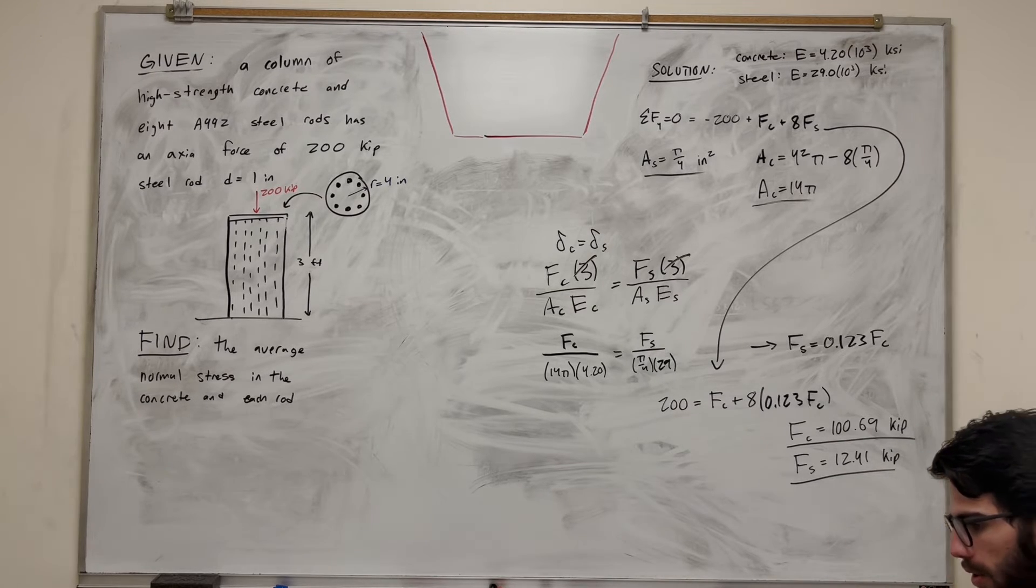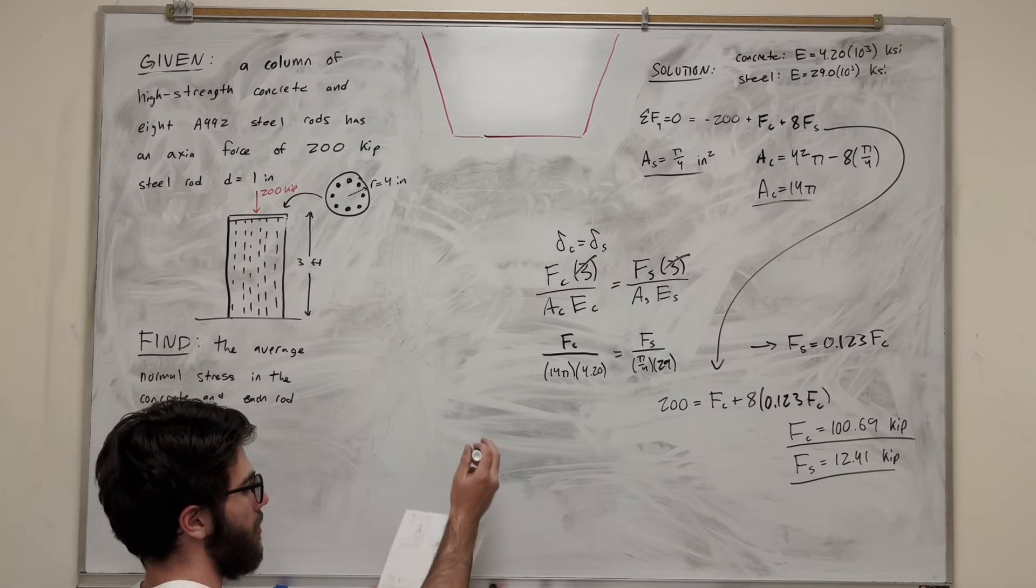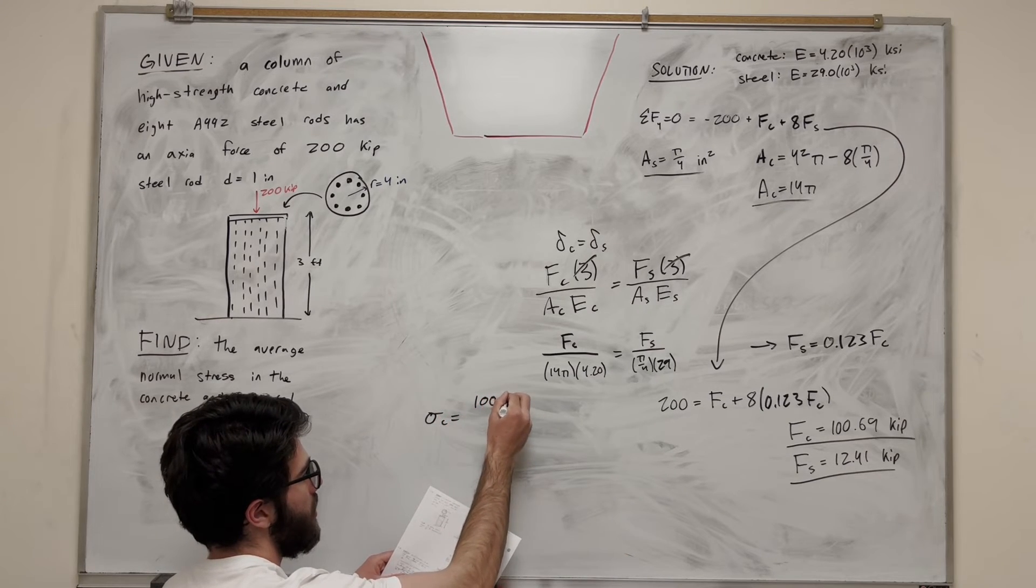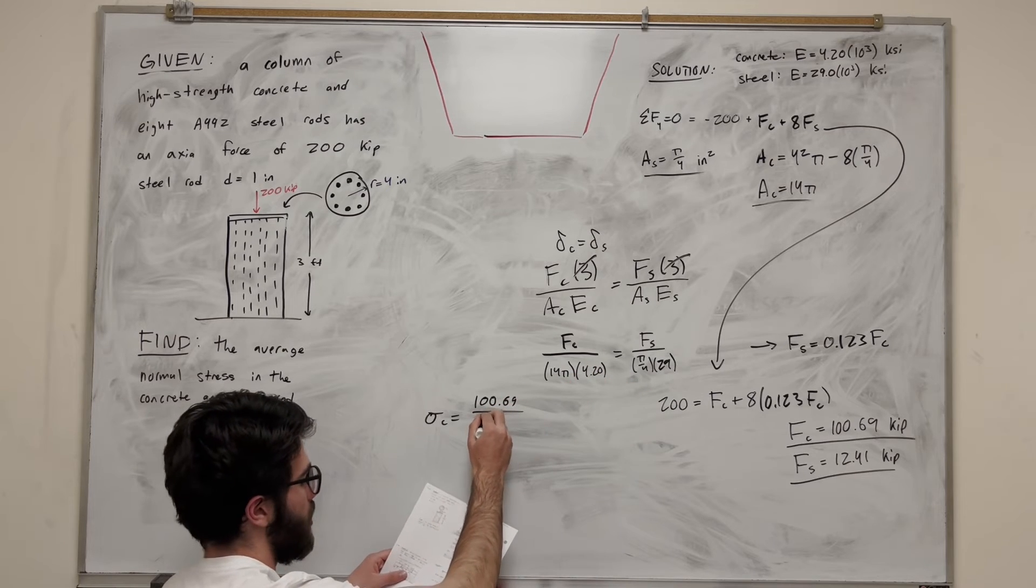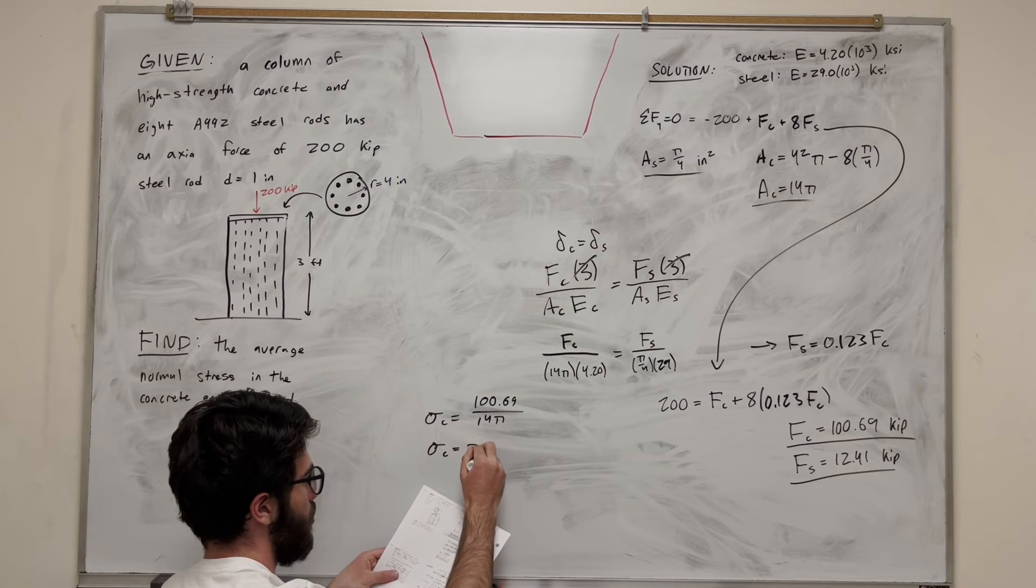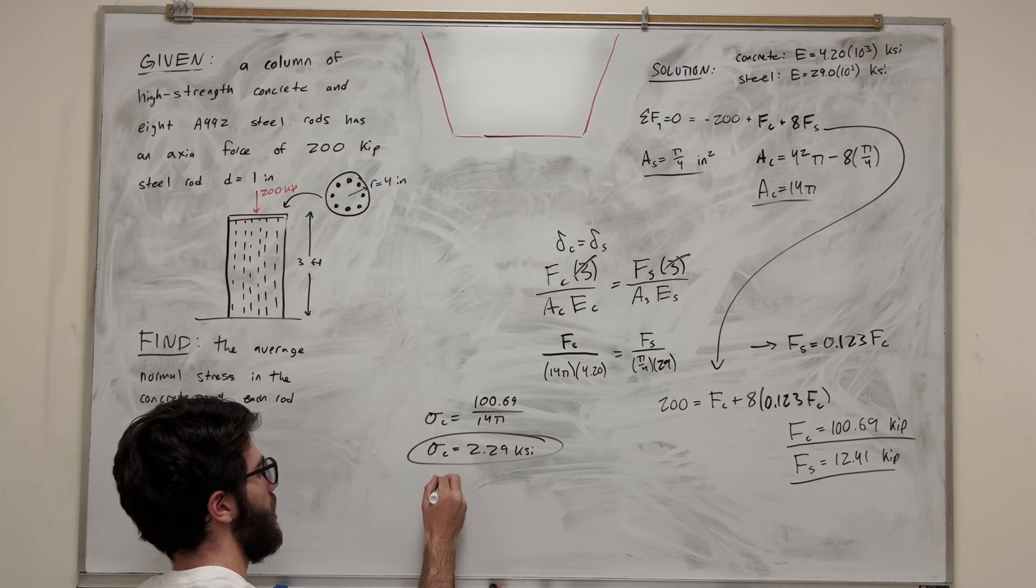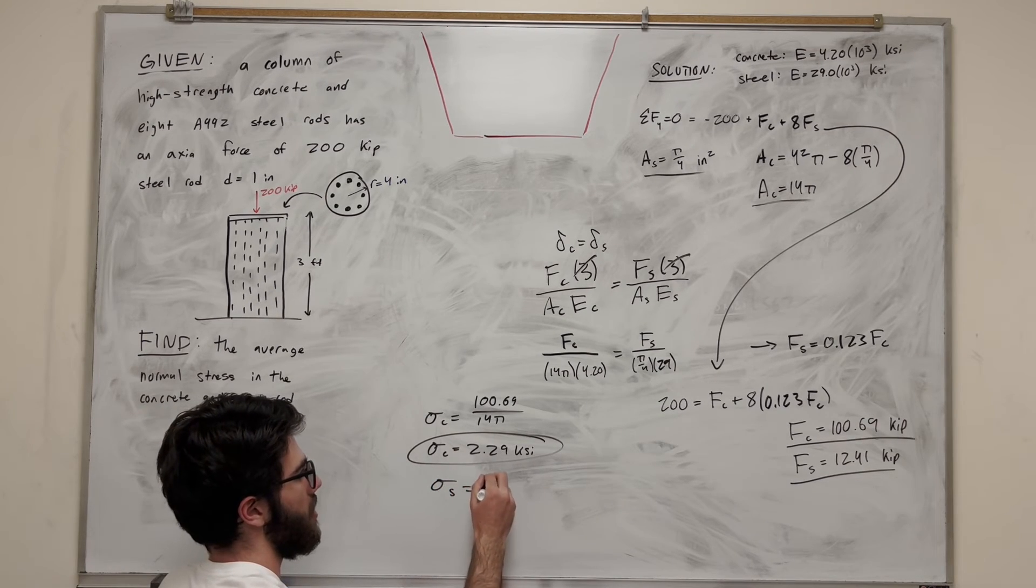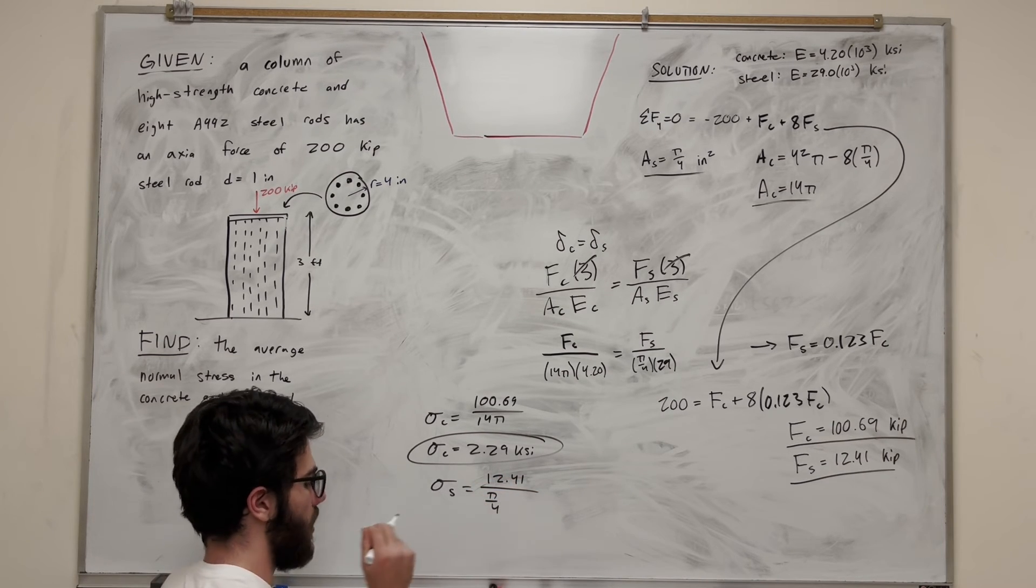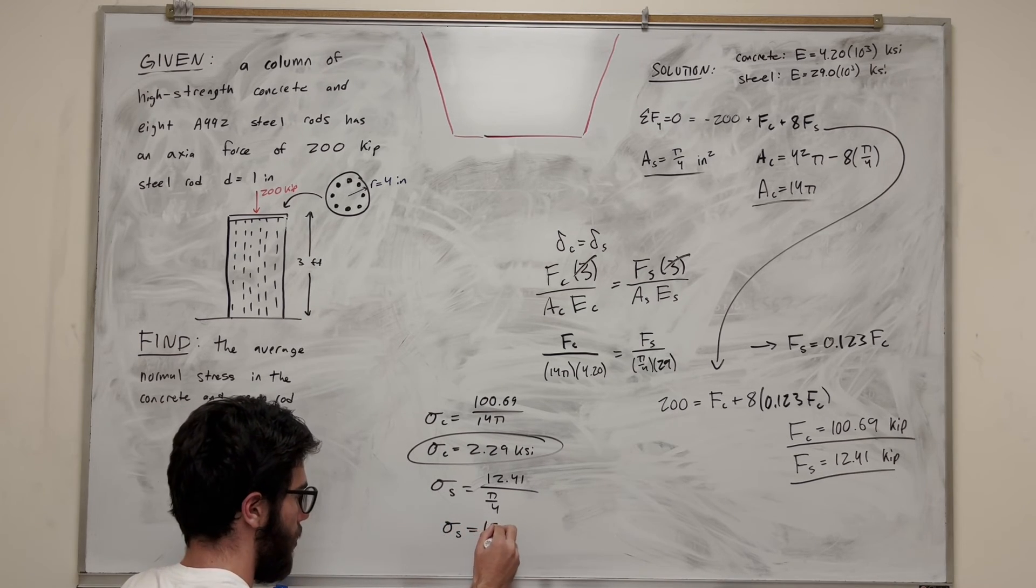So now all we get to do is find the normal stress, which is pretty easy. So normal stress, I'll move it over here. So normal stress of the concrete is equal to the force of the concrete, 106.9 over the area of the concrete. Found that to be 14 pi. So we do the math on this. This is 2.29 ksi. So that's for our concrete. For our steel, we're going to take the force of the steel. So this is 12.41 divided by the area, which is pi over 4. So then, do the math on this. Get that the thing of the steel is 15.8 ksi.